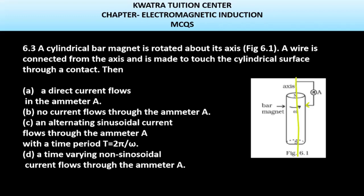First, they have given a direct current flows in the ammeter A. Second, no current flows through the ammeter A. Third, an alternating sinusoidal current flows through the ammeter A. Fourth, a time varying non-sinusoidal current flows through the ammeter A.